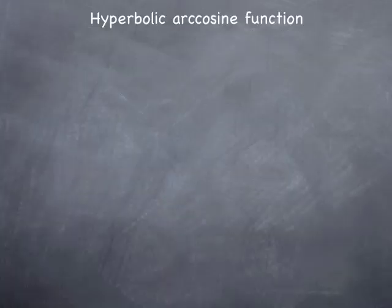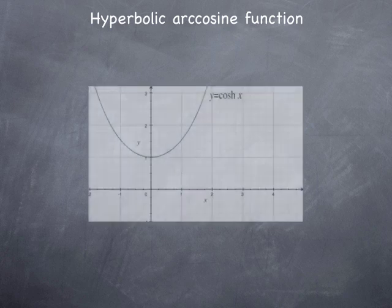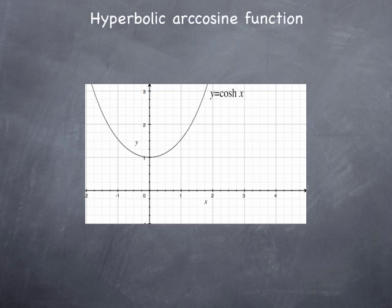Now let's consider the inverse function for the hyperbolic cosine. The hyperbolic cosine, as seen in the previous video, takes values greater than or equal to 1 and is defined on the entire real line, but it is not one-to-one. To define its inverse, we need to restrict to an interval on which it is one-to-one.